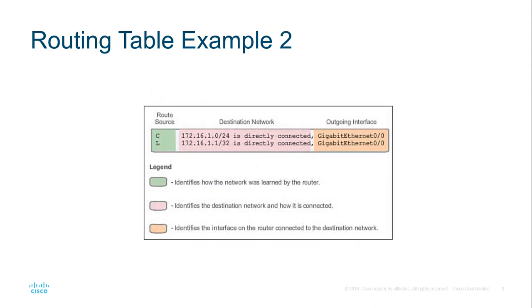Here we have how the routes are sourced. This will identify how the network was learned by the router. Directly connected interfaces have two route sources: C identifies directly connected. Directly connected networks are automatically created whenever an interface is configured with an IP address, while L identifies a local route. Local routes are automatically created whenever an interface is configured with an IP address and active.